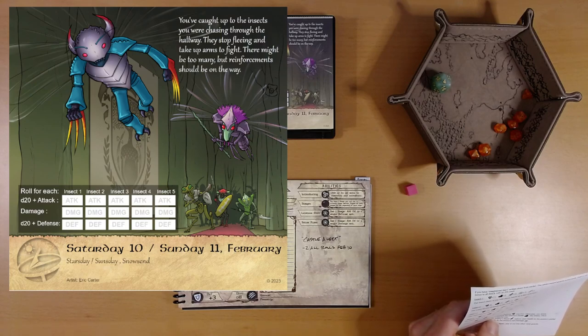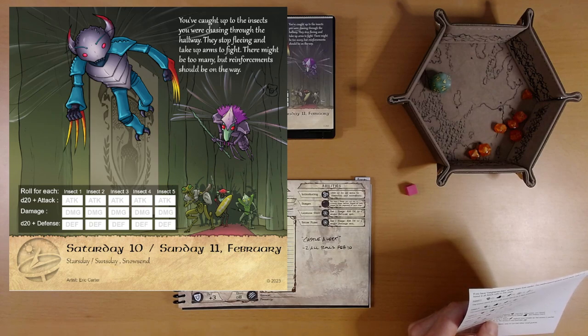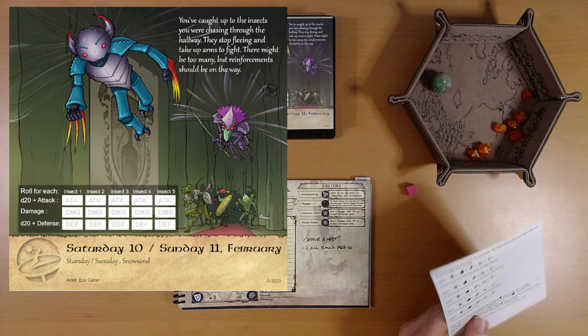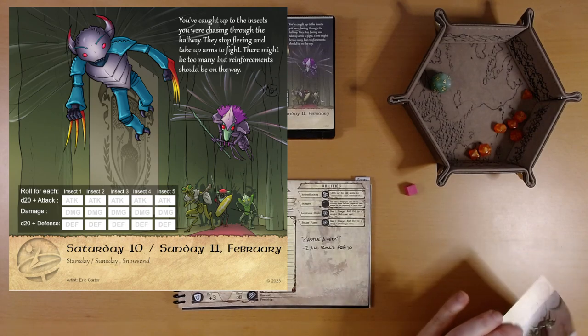You've caught up to the insects you were chasing through the hallway. They stop fleeing and take up arms to fight. There might be too many, but reinforcements should be on the way. Five. This is the biggest fight we've been in. Five insects, and we're at disadvantage.